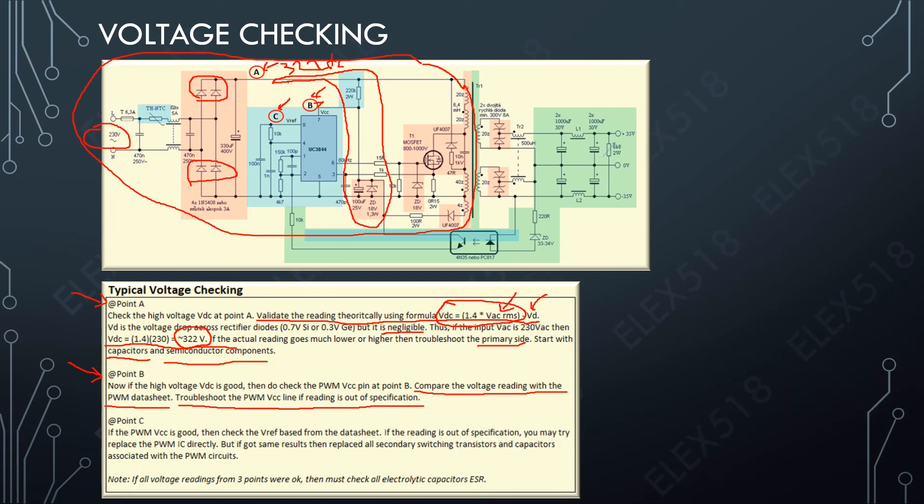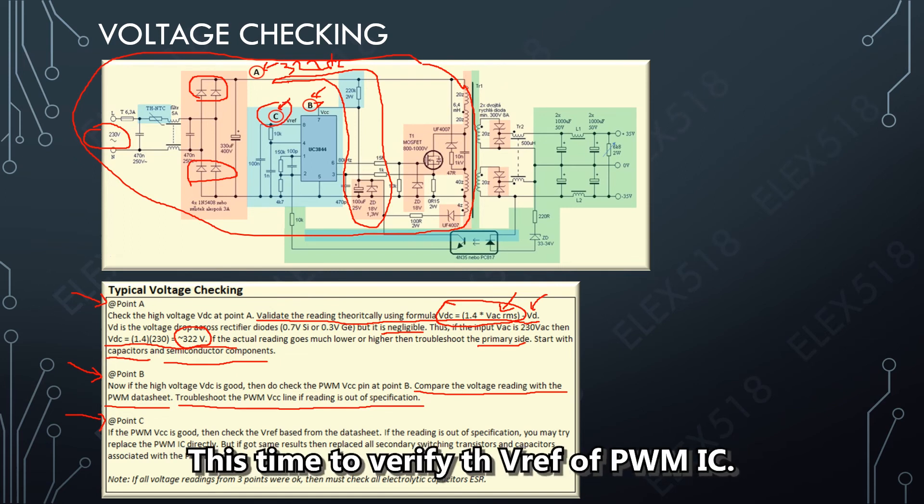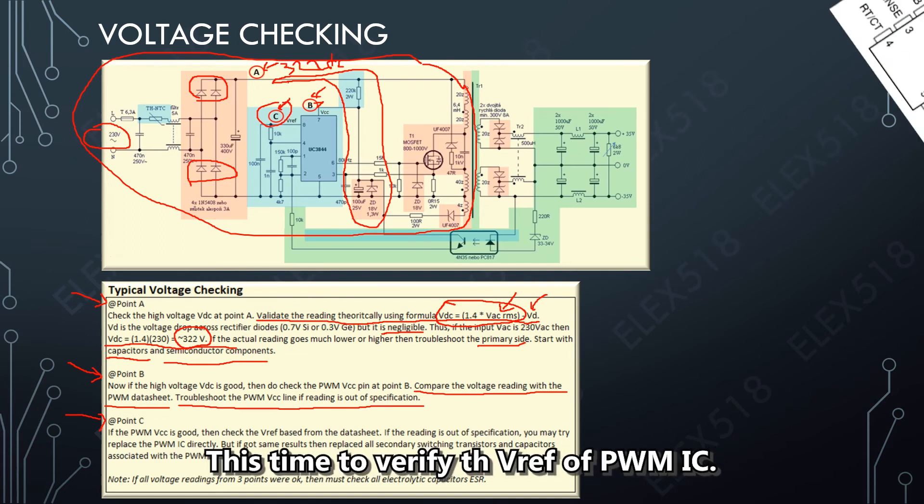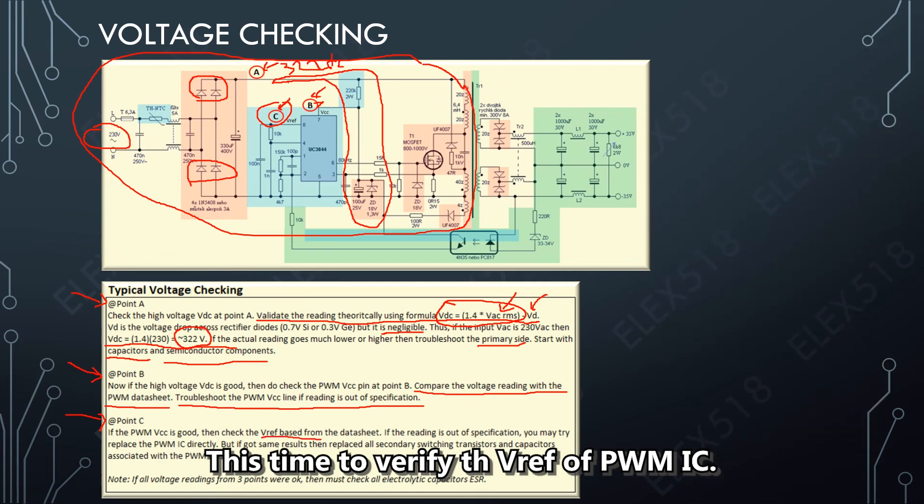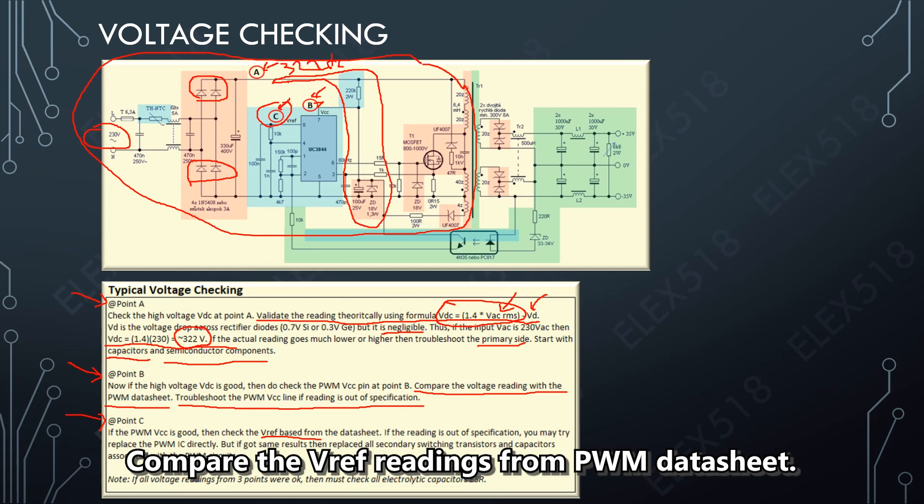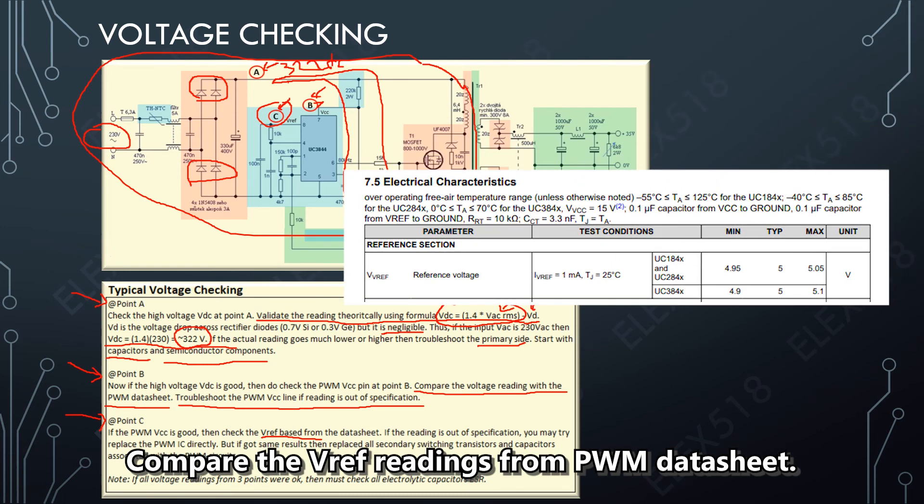Let's say the PWM VCC is okay, then I need to move to point C. From here I want to verify the VREF of the PWM, and I also compare the VREF readings to the datasheet of PWM IC.